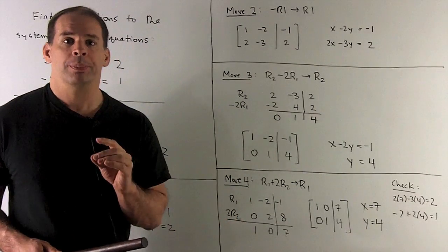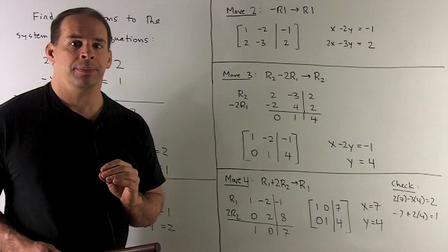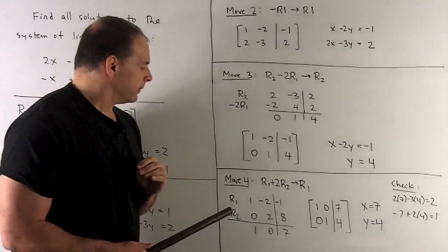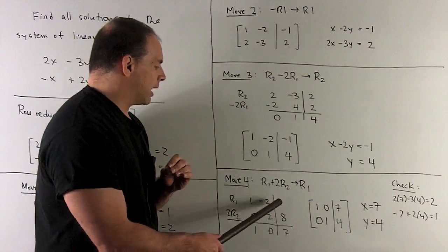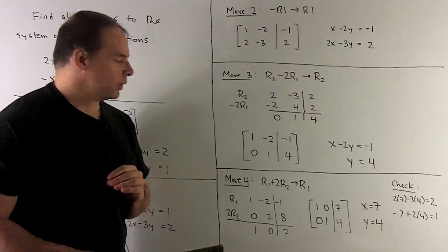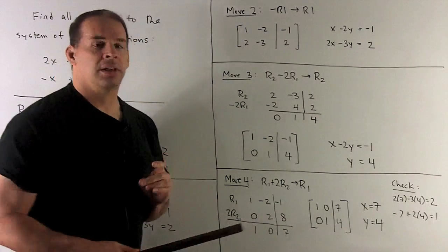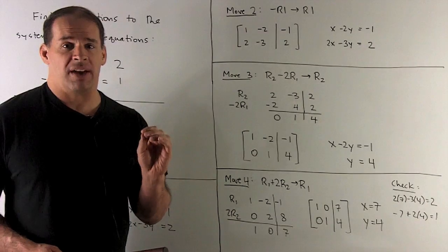No change on row 2. It only changes row 1. We do our work on the side. So we'll have row 1. So that's 1 minus 2 minus 1. To row 2 is 0, 2, 8. We add, we get the row 1, 0, 7.